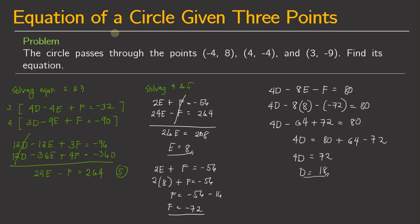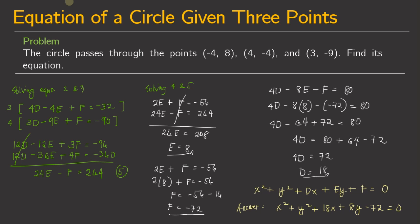Since we already have the values of d, e, and f, we can now find the equation of the circle. The equation is in the form x squared plus y squared plus dx plus ey plus f equals 0. Substituting d equals 18, e equals 8, and f equals negative 72, the answer is: x squared plus y squared plus 18x plus 8y minus 72 equals 0.